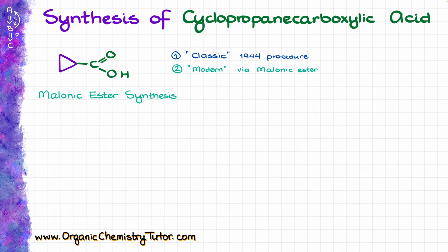We are also going to look at the synthesis of cyclopropane carboxylic acid via the malonic ester synthesis approach — the one your instructor will expect on the exam. For the malonic ester synthesis, we typically start with diethyl or dimethyl malonate, which is a very good starting point for enol and enolate chemistry, because the pKa of the protons in the middle, between those two carbonyls, is fairly low — around 13. This means they can be easily removed even with a mild base, such as sodium or potassium ethoxide. The counter ion doesn't really matter for our purposes.